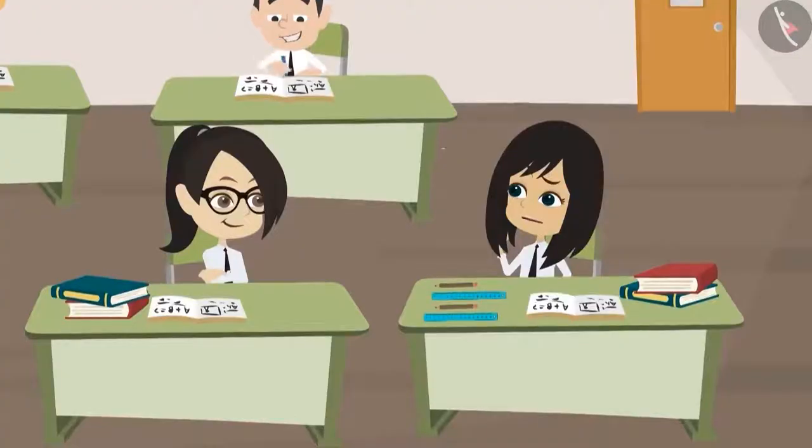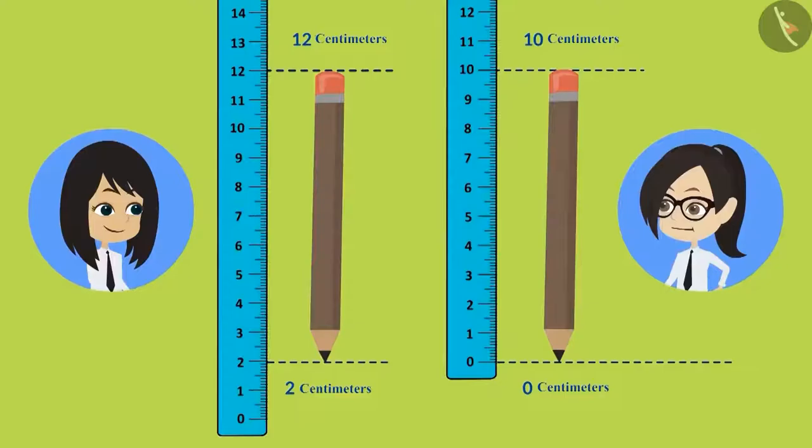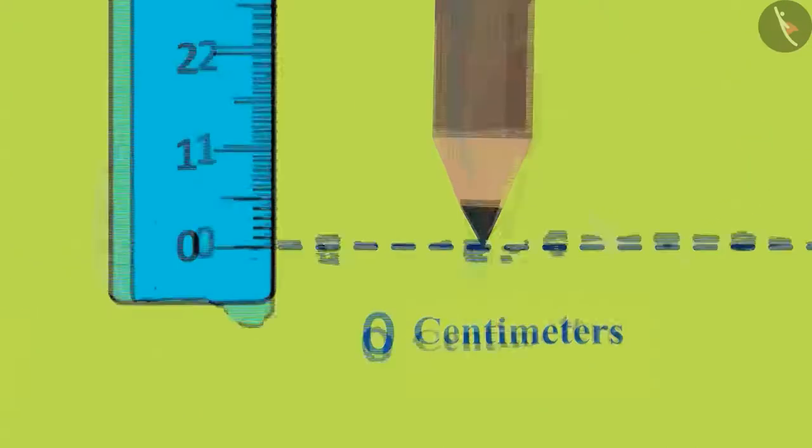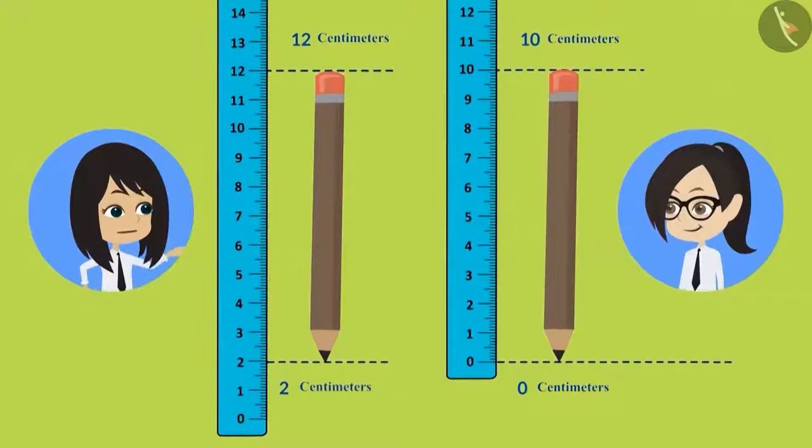What difference does that make? It leads to incorrect measurements. To measure the correct length of objects using a scale, we should place their lower end at 0, like I have done. Oh, I understand now.